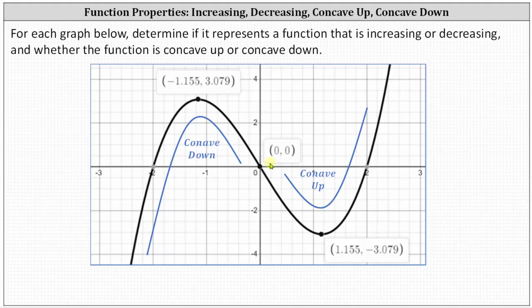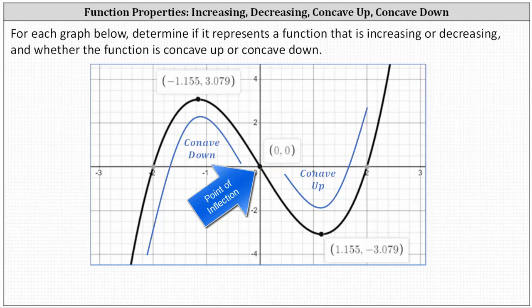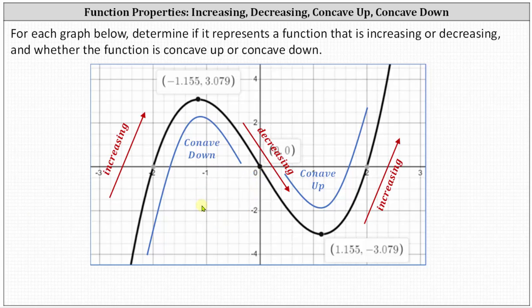The point at which a function changes concavity is called a point of inflection, which on this graph appears at the origin. Here we see the properties mixed together. You may want to pause the video and take some notes on this slide.